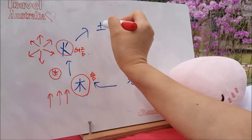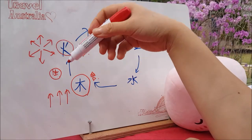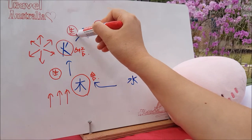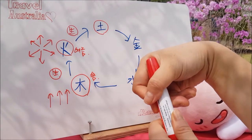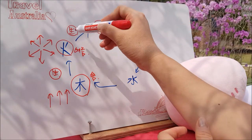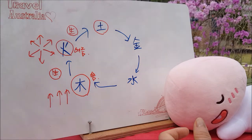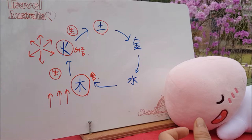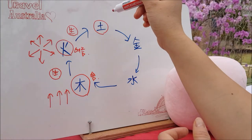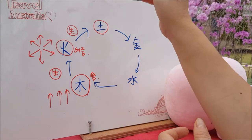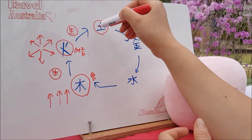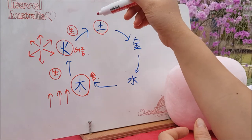화는 토를 생해줍니다. 목과 토금수 방향으로 계속 설명을 드리고 있고요. 여름은 각 계절의 끝을 관장하는 토를 생해줍니다. 진술축미라고 하는 단어를 들어보신 적이 있는지 모르겠는데, 각 계절의 끝 달을 관장하고 있고요. 토는 그래서 다른 계절과 다른 계절을 이어주는 중계 역할을 많이 해요.